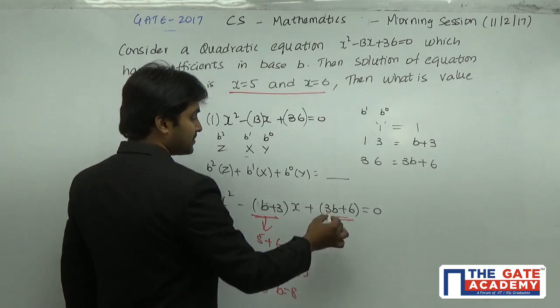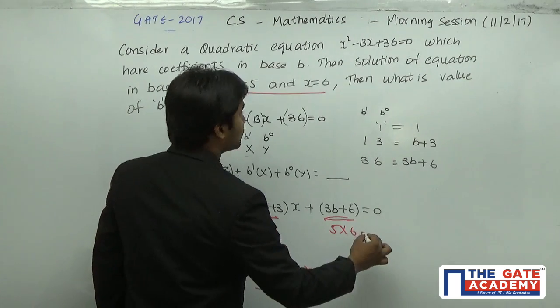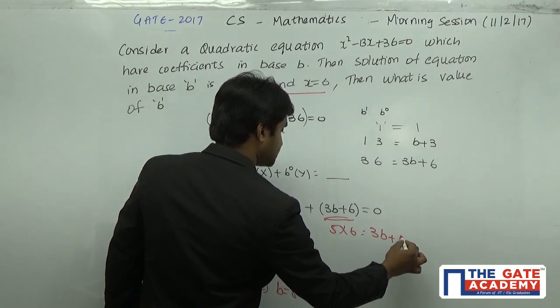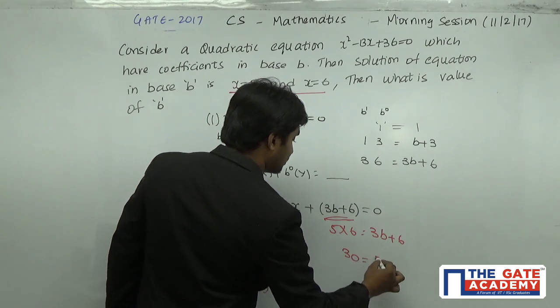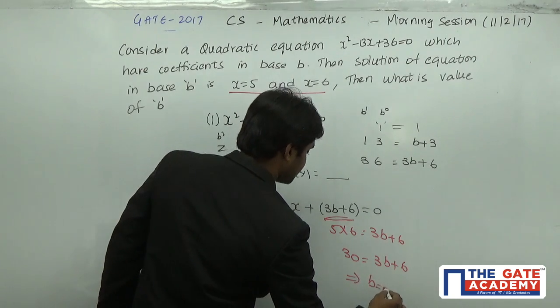Or we can verify with this one. This is the product of the numbers. So it is 5 × 6 which equals 3B + 6. So 30 = 3B + 6.